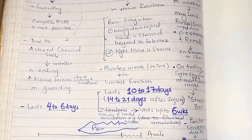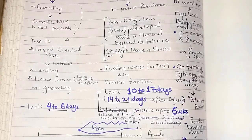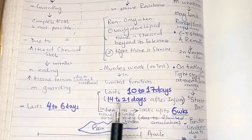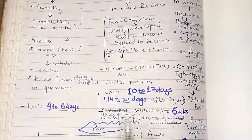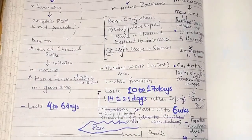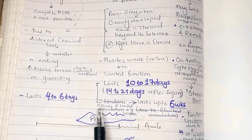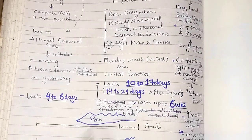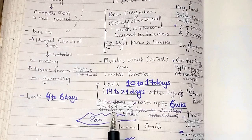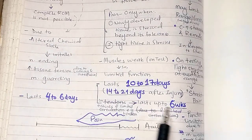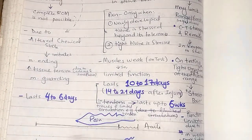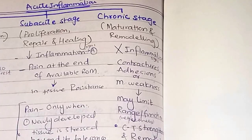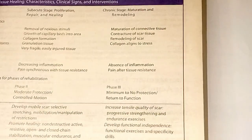The duration of the subacute stage is 10 to 17 days — that is, 14 to 21 days after injury, once the acute stage is gone. However, in tissues with limited circulation, such as tendons, the subacute stage can last up to six weeks because of the decreased circulation.